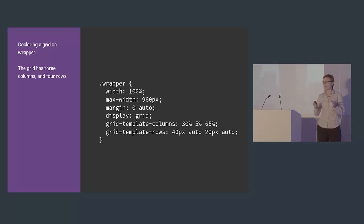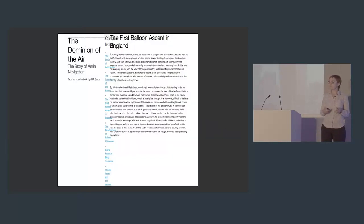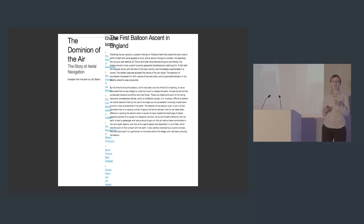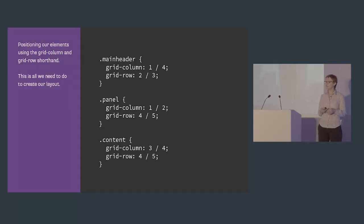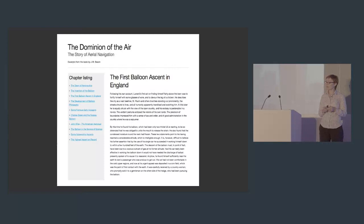We get started by setting up our grid as before. I've got three columns — the five-percent column there is acting as a gutter between the sidebar and the main content — and four rows, some set to height auto so they'll expand to whatever I put in them. I've declared a grid but haven't positioned anything yet, so it looks a bit odd. Grid is trying to auto-place items but doesn't know that the skinny column is a gutter. So I position the header across the grid from column line one to column line four, starting at row line two and finishing at three, and then position the panel and main content too, ending up with our layout.